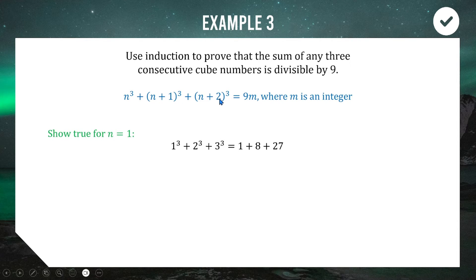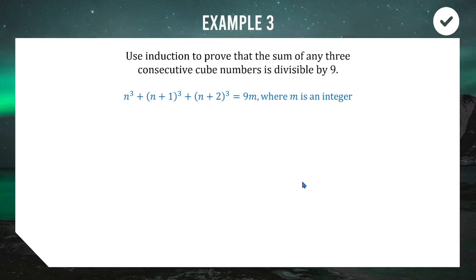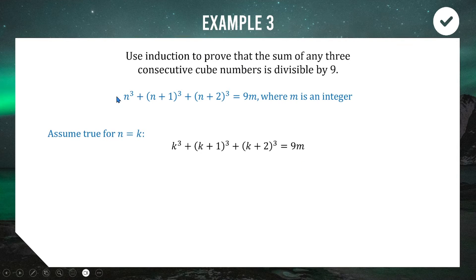Adding those together gives 36, and 36 = 9 × 4, so it is nine times something. The initial case n = 1 holds true. For the assumption, we assume when n = k that k³ + (k+1)³ + (k+2)³ = 9m, where m is a whole number.